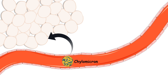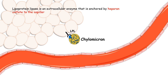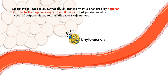Chylomicron circulates inside the bloodstream and eventually encounters adipose tissue. Its job is to deposit fatty acids from triglycerides when it encounters adipose tissue. On the adipose tissue there are specific enzymes known as lipoprotein lipase. The apolipoprotein C2 component of chylomicron activates the lipoprotein lipase. Lipoprotein lipase is an extracellular enzyme anchored to heparin sulfate on the capillary walls of many tissues, but is found mainly in adipose tissue.